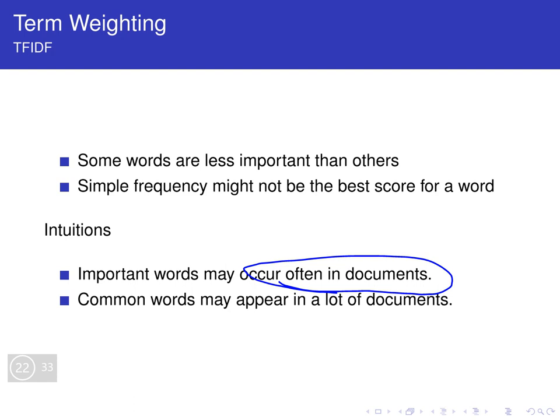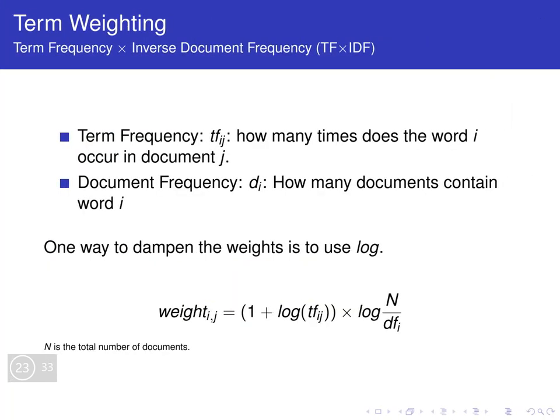However, common words will usually appear in a lot of documents — the word 'the' is likely to appear in most documents, but the word 'fire' might not. So important words might not appear in all documents, but only in the documents that talk about that topic. With those intuitions, we can talk about the term frequency by inverse document frequency, or TF-IDF.